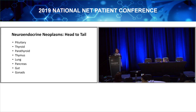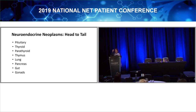Endocrine cells live in many, many different parts of the body. The pituitary is a tiny gland at the bottom of the brain — a neuroendocrine tissue made up almost exclusively of neuroendocrine cells, though it's only a tiny pea-sized gland. When we talk about brain tumors, we're usually talking about something else, but sometimes we're talking about neuroendocrine tumors, which are pituitary tumors.